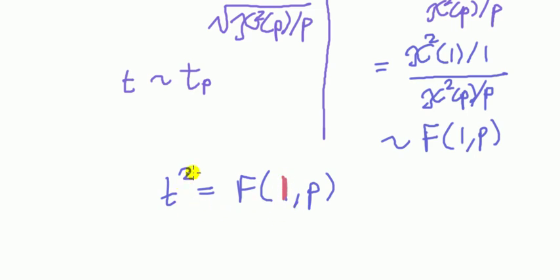Note that t-squared equals the f distribution when the degree of freedom in the numerator is one. No restriction on the degree of freedom in the denominator, but the one in the numerator must be one. If it's something else, then t-squared will not equal the f.